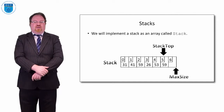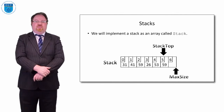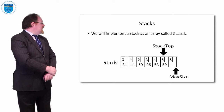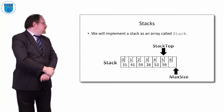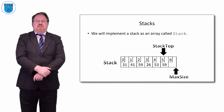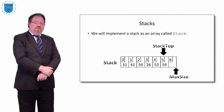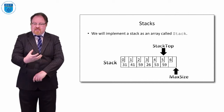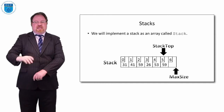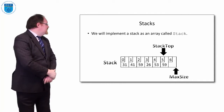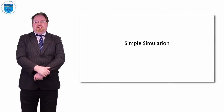Here we have a stack. It's almost full — the max size is seven in this case, with indices zero through six. Stack top at the moment is pointing at number five, which is the sixth element of the array. So when stack top gets to six and we add another element in, the stack is full. So when stack top is six and max size is seven, that means the stack is full.